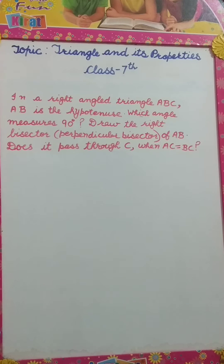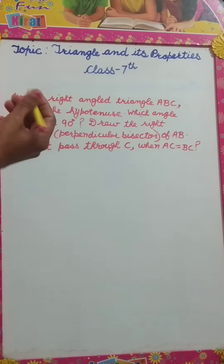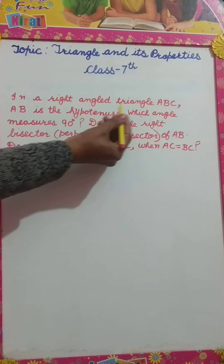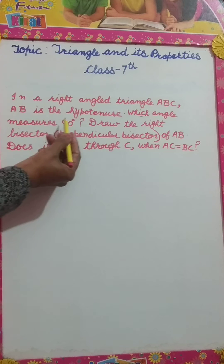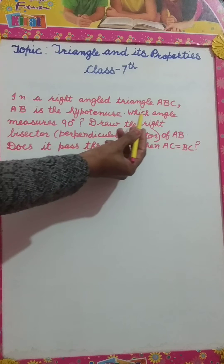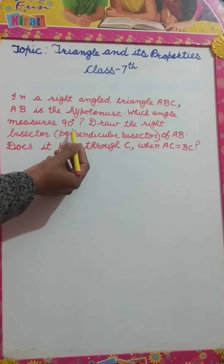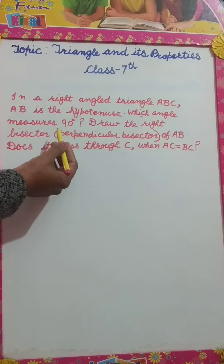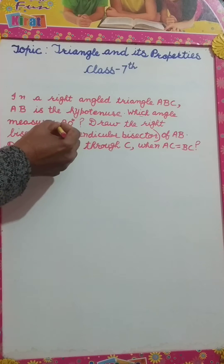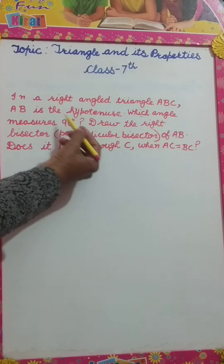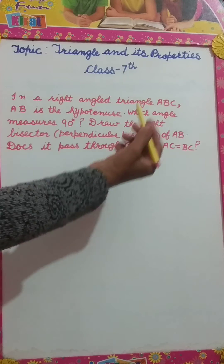Hello friends, welcome back with another video on the topic triangle and its properties for class 7. The question is: in a right-angled triangle ABC, AB is the hypotenuse. Which angle measures 90 degrees? You have to tell, in triangle ABC, which angle measures 90 degrees when the hypotenuse is AB.